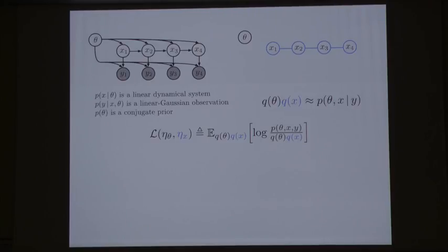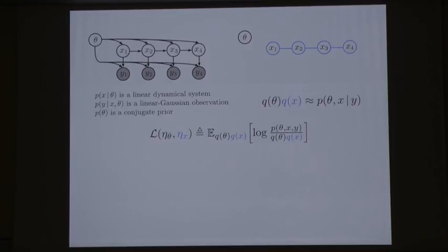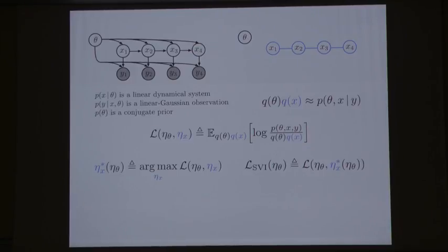I'm going to write the variational objective as a function of the natural parameters for Q of theta and Q of X, writing natural parameters with eta. The natural parameters for Q of theta are eta sub theta, and for Q of X are eta sub X. This is the usual variational evidence lower bound in terms of concrete parameters. Because this problem is so nice, we can perfectly optimize out eta sub X as a function of eta sub theta — defining it as an argmax — and then work with a single-argument objective I'll call L_SVI.